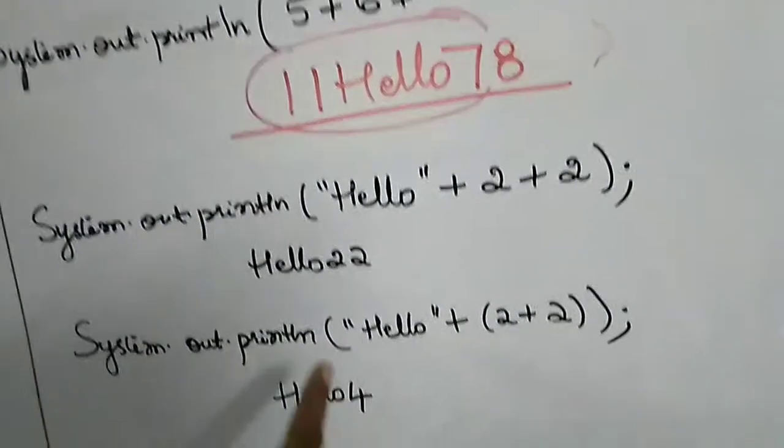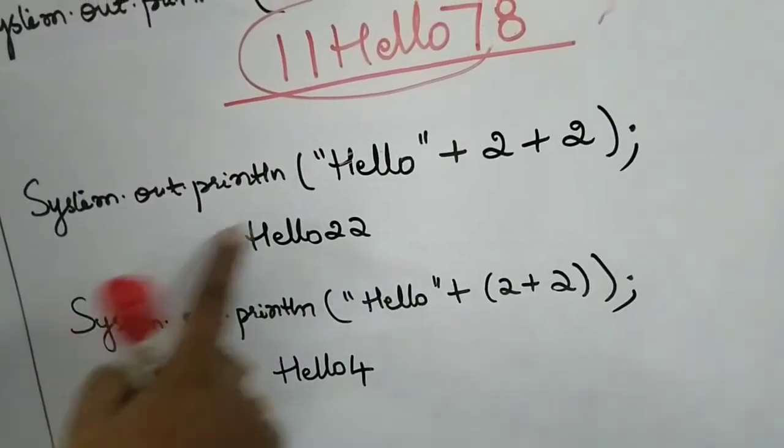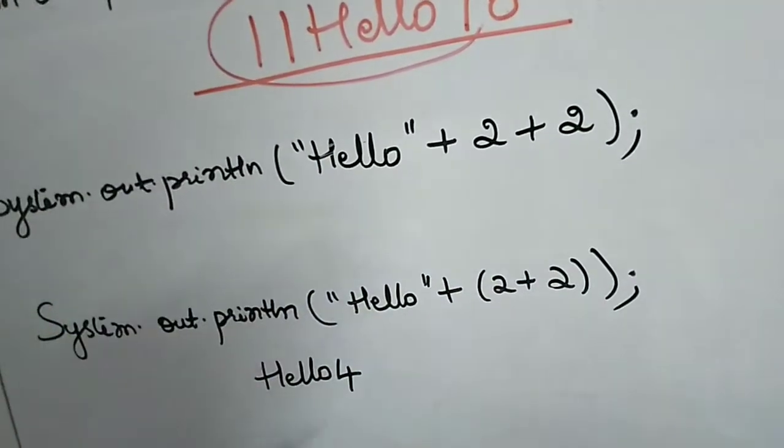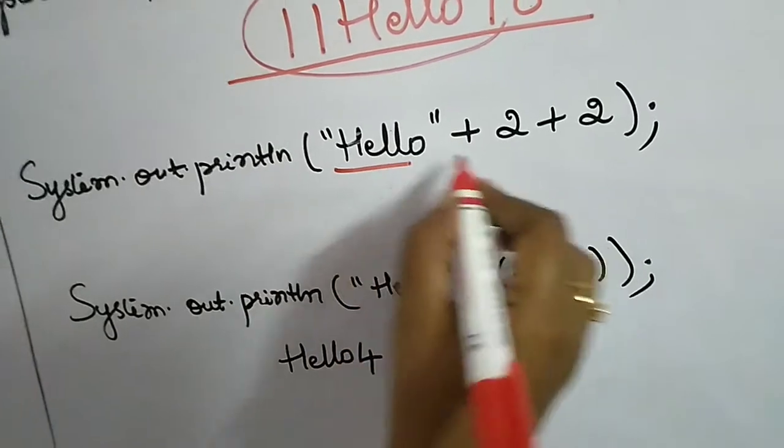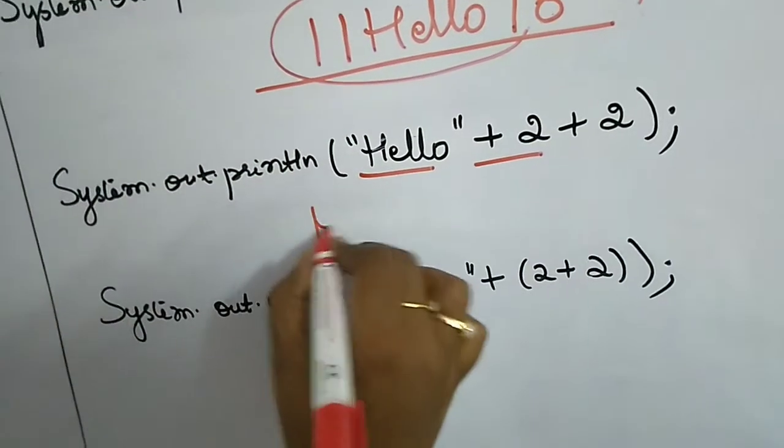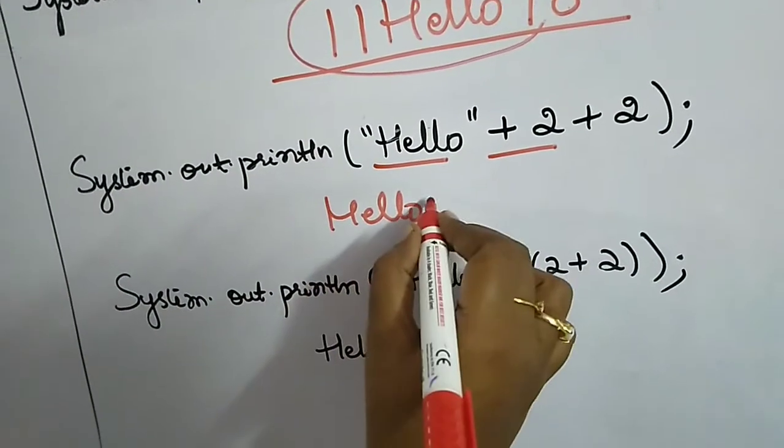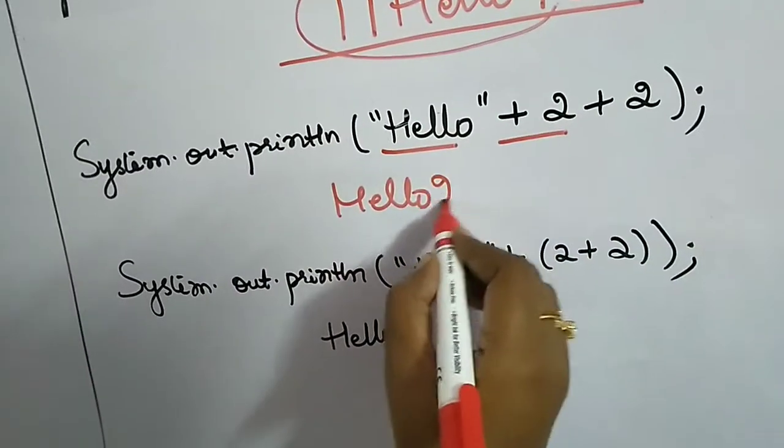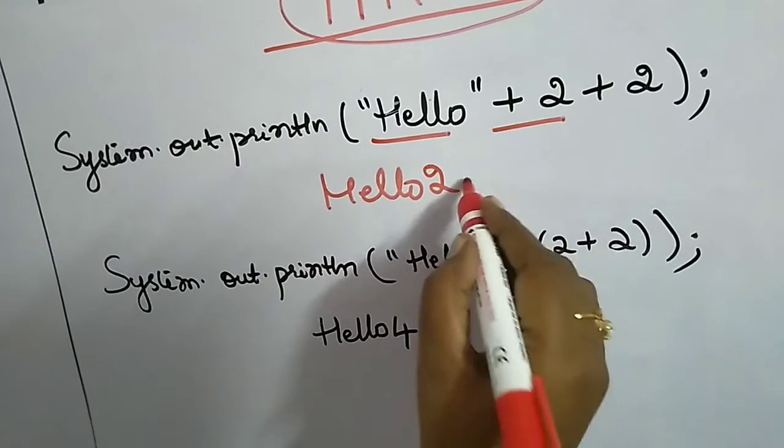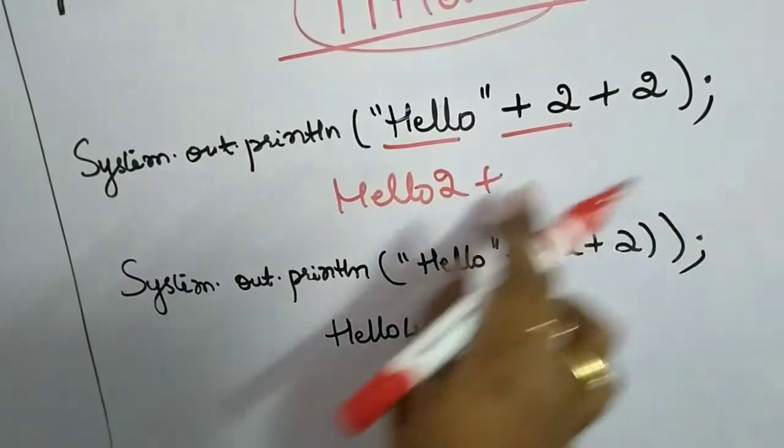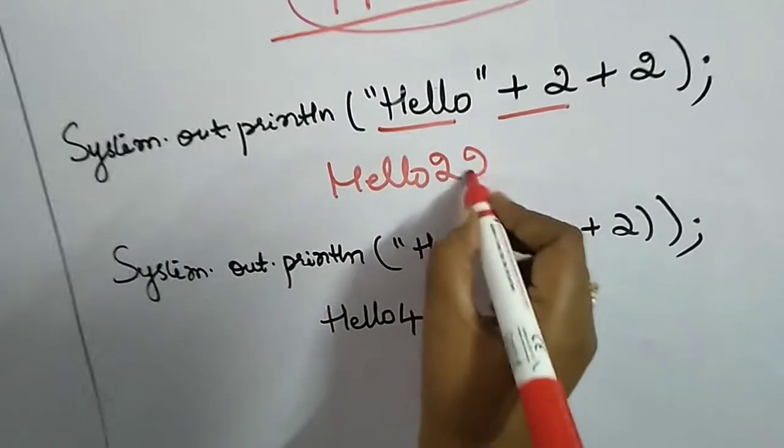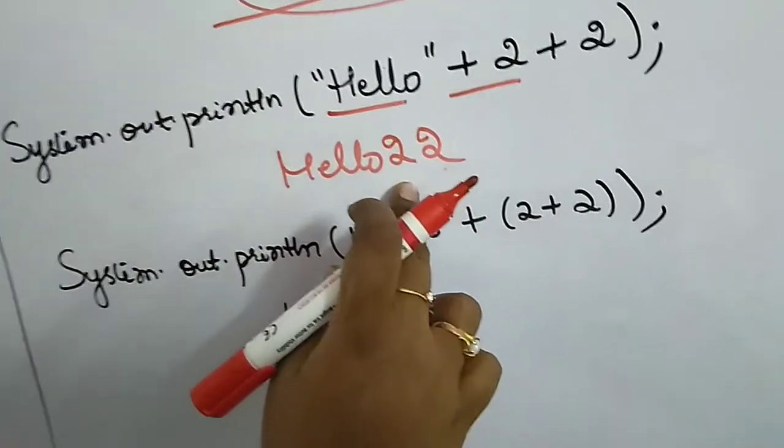Let's take another example. I said Hello plus two plus two. What will be the output? Since one operand is string, it will make this two also a string: Hello2. Plus again another two. Since one operand is string, it will imagine the other one also to be string. So the output will be Hello22.